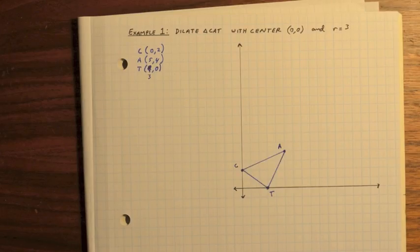So now let's try an example. Here we're going to dilate CAT with center at the origin, 0, 0, and the scale factor is 3. So first, graph your pre-image. Notice I changed point T. I wanted it a bit more manageable. And since we're dilating with the center at 0, we're just going to multiply the x and y by our scale factor.